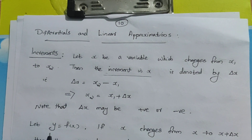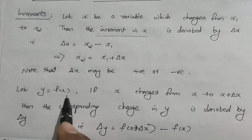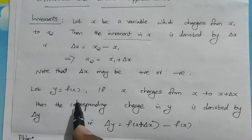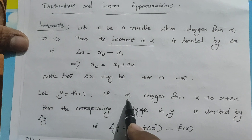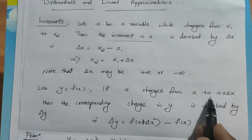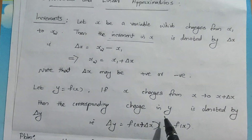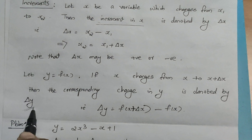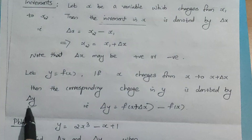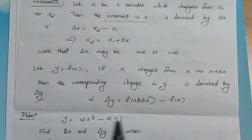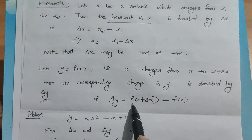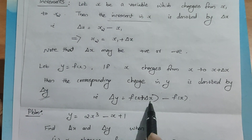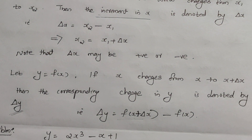Let Y equal to F of X be our dependent function. When the independent variable X changes from X to X plus delta X, the corresponding change in Y is denoted by delta Y. Delta Y is equal to F of X plus delta X minus F of X.